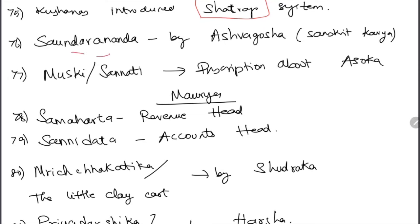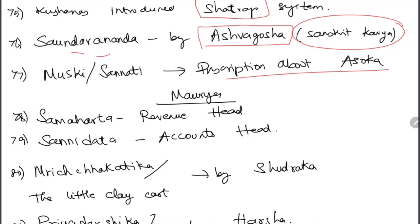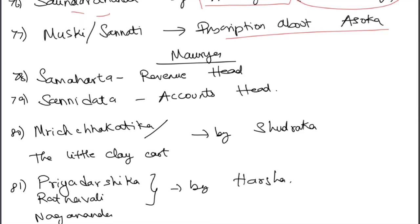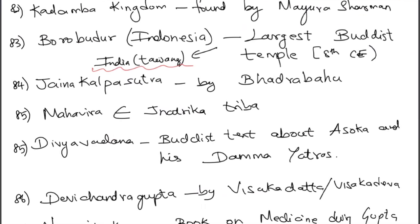Saundarananda was a book written by Ashvagosha — it is called a Sanskrit kavya. Muski and Gavimath inscriptions mention Ashoka. In Mauryan administration: Samartha were revenue heads; Sannidhatri were accounts heads. Mrichchhakatika (The Little Clay Cart) was written by Shudraka. Priyadarshika, Ratnavali, and Nagananda were books written by Harshavardhana.